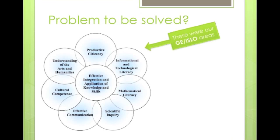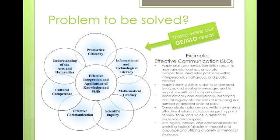The main problem we wanted to solve as part of this project: what you see here is a flower diagram that showed the key GE, or general education, or institutional student learning outcome areas. They range from productive citizenry through mathematical literacy, cultural competence, and so on, all with the idea that they would join together to produce an effective integration and application of knowledge and skills. While we found these were good general concepts, the actual devil was in the details in terms of the SLOs that were developed.